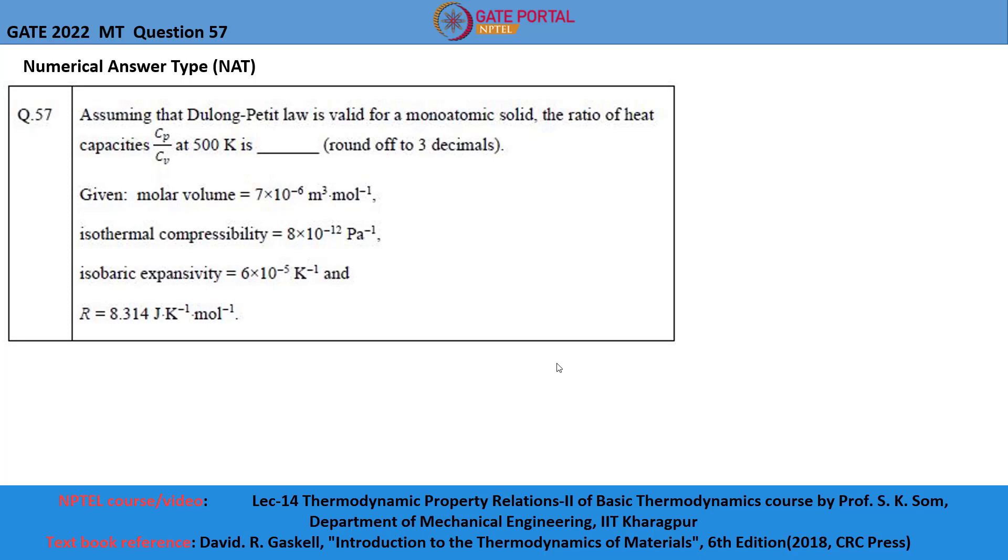Assuming that Dulong-Petit's law is valid for a monoatomic solid, the ratio of heat capacities Cp by Cv at 500 Kelvin is to be found out. It is also given that molar volume equals 7 into 10 power minus 6 meter cube per mole, isothermal compressibility is equal to 8 into 10 power minus 12 Pascal inverse, and isobaric expansivity is equal to 6 into 10 power minus 5 Kelvin inverse, and gas constant equals 8.314 joules per mole per Kelvin.